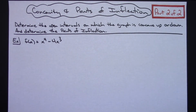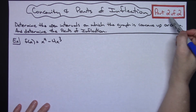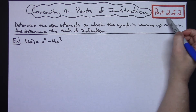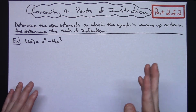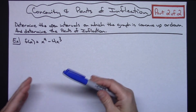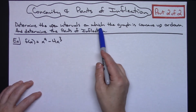In this video I'm going to actually work out a problem where we find the concavity and the points of inflection of a curve. This is part two of two, so you might want to go back and watch part one first, where I talk about the definition of concavity, points of inflection, and what causes them. Definitely watch part one if you don't have background on these topics.